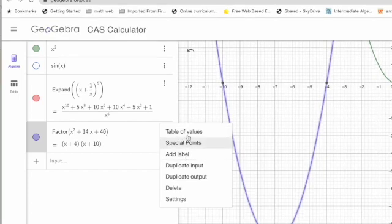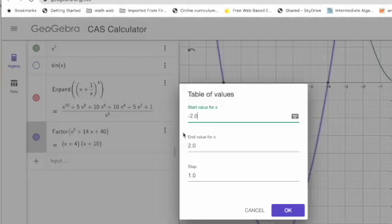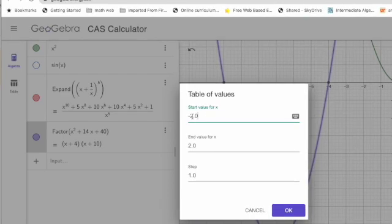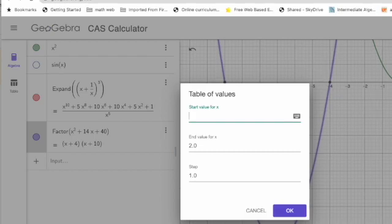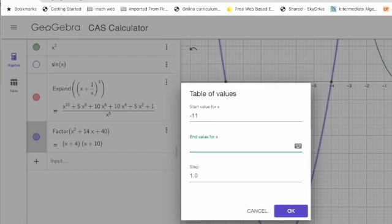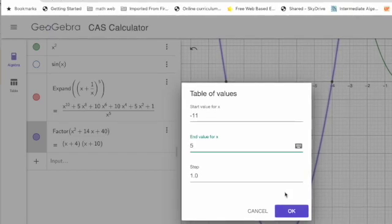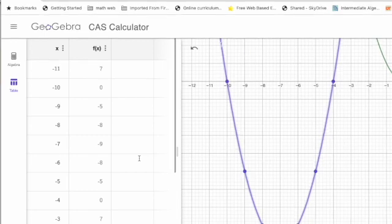You can add label if you want or you want to duplicate the input, you can. So first three are really important. Table of values. If I click on table of values and look, it's going to ask me table of values from which particular value. Let's say start from negative 11 and let's go to 5. Step 1 and click OK.